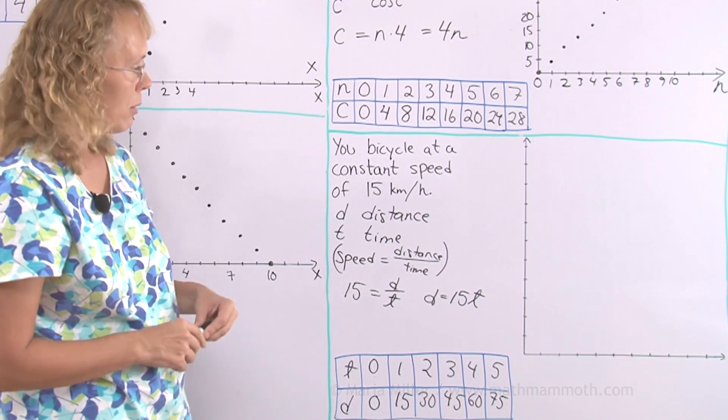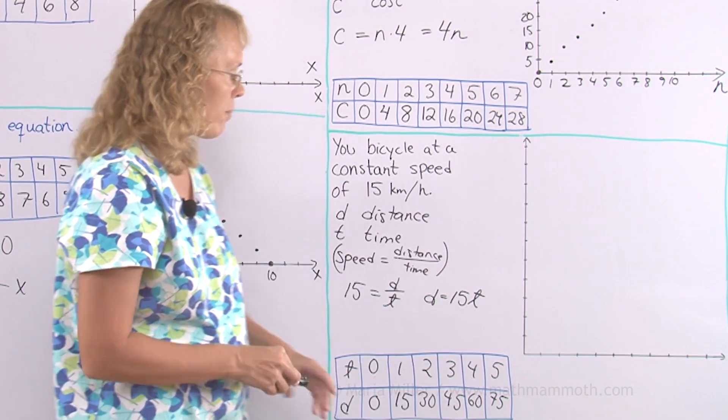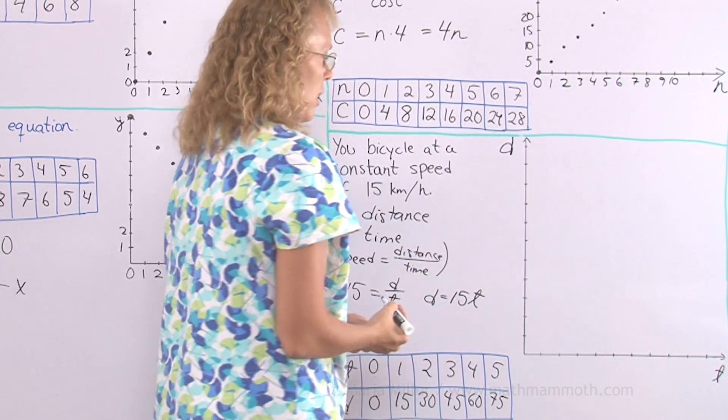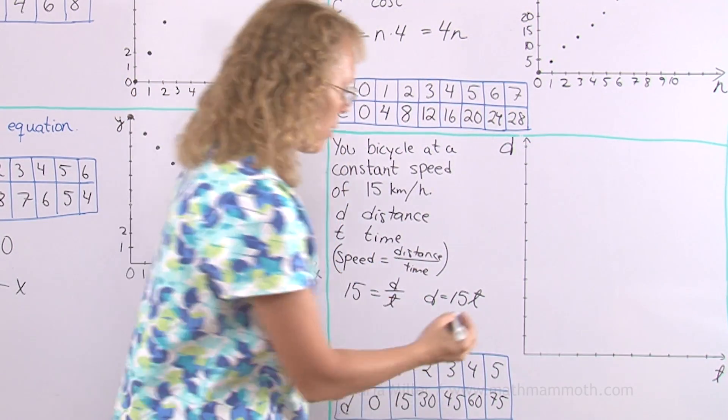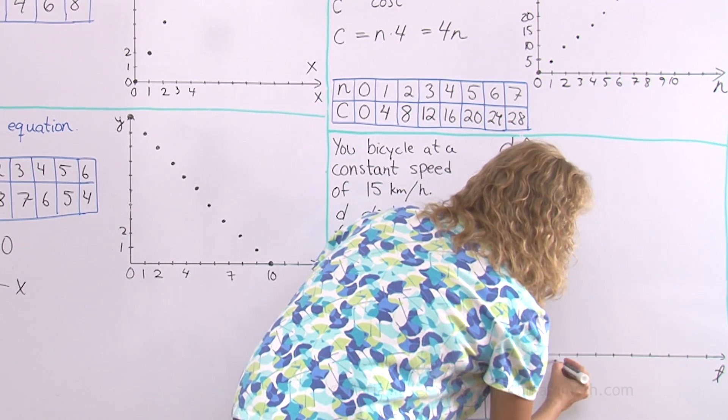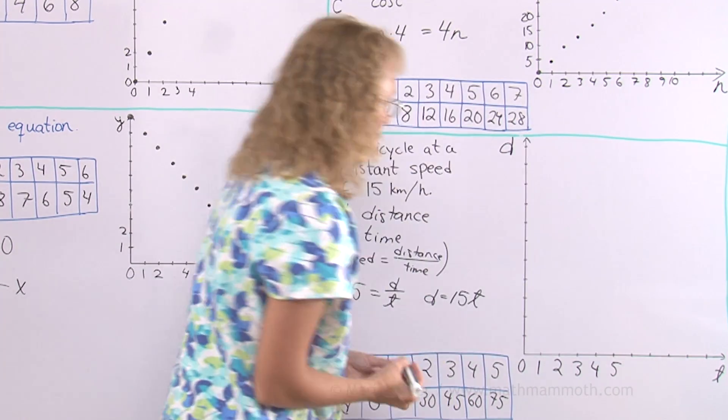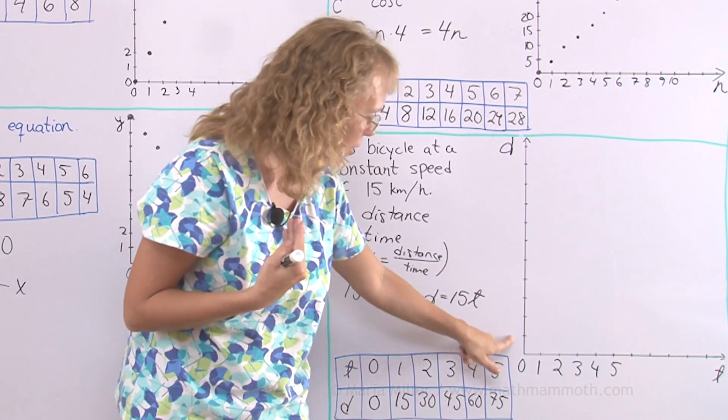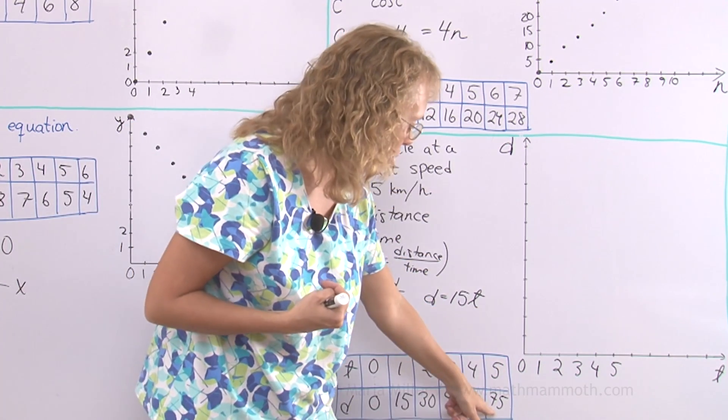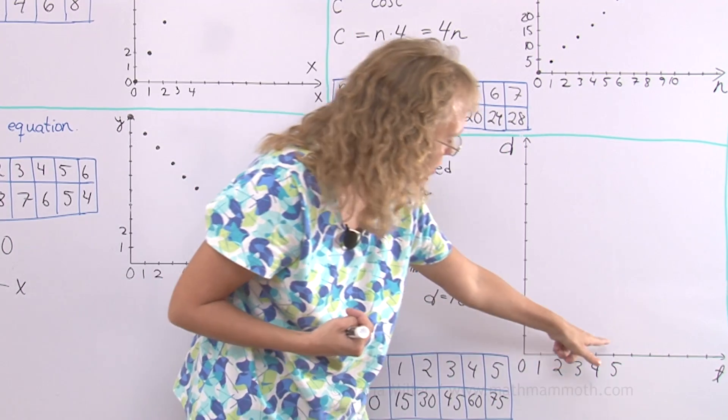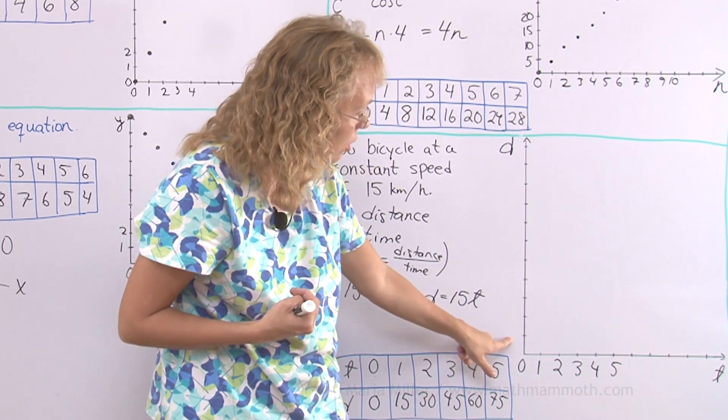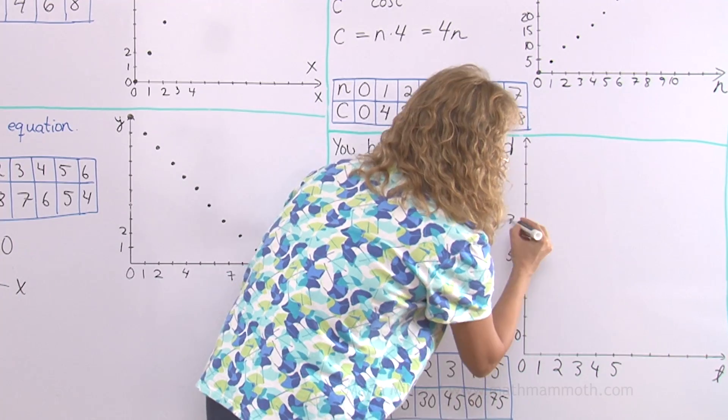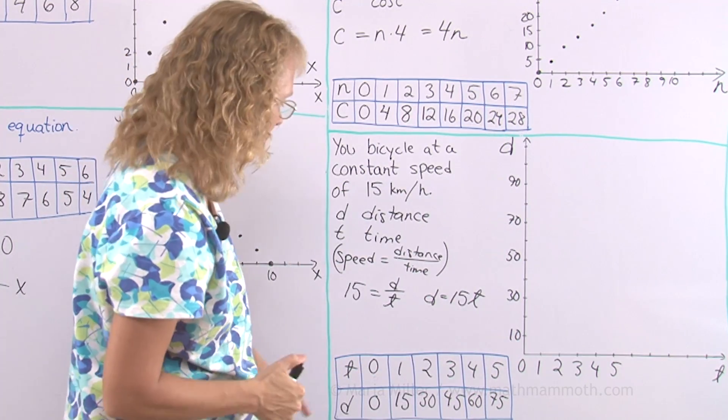And then we will plot these points over here. Like I said this is going to be the time axis and this is going to be the distance. And so time goes by once. 0, 1, 2, 3, 4, 5 and so on. Over here I need to think about my scaling again here. You see I went up to 75 in 5 hours. So maybe I will make this to go by tens.